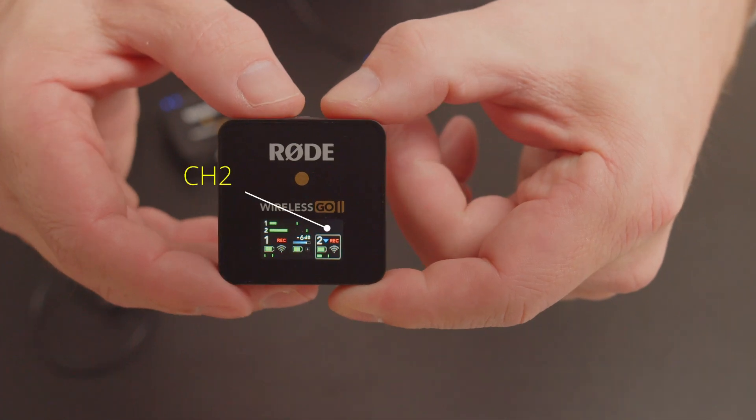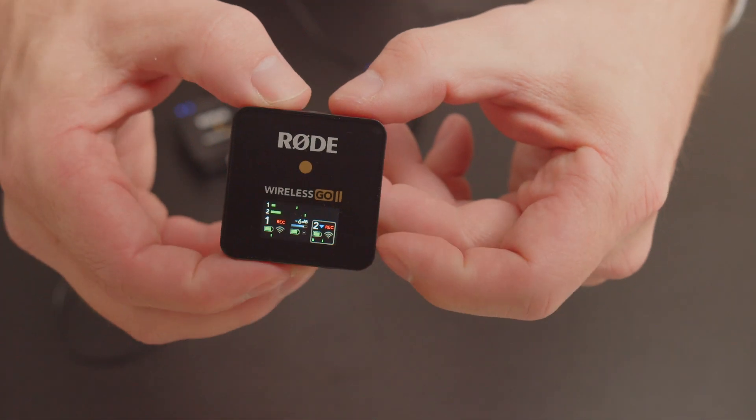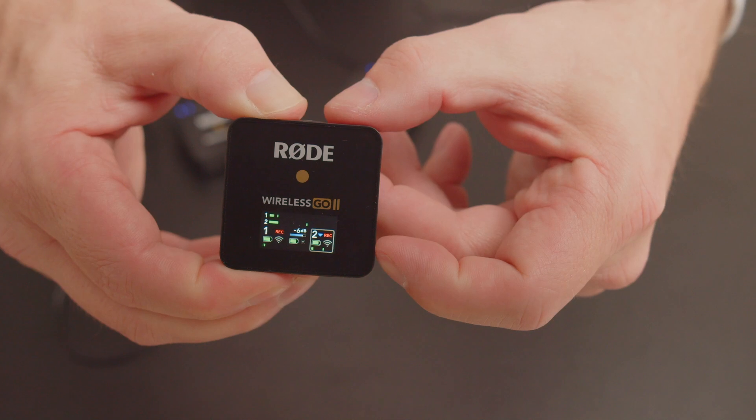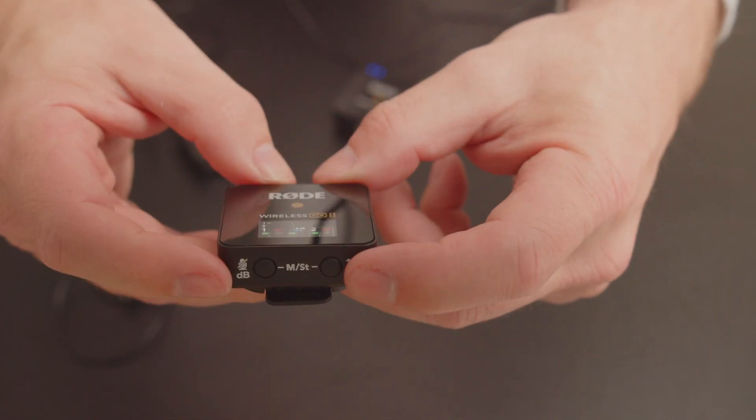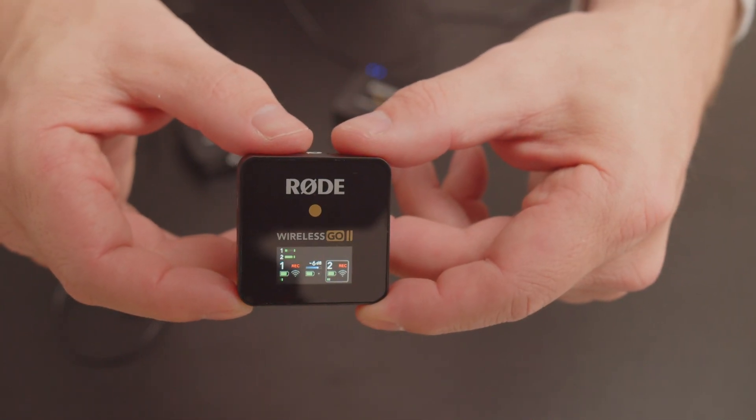And you'll notice that channel 2 has a blue triangle on it. When it's highlighted press and hold that db button next to it and that will disable the pad and remove the hideous noise.